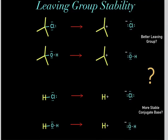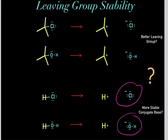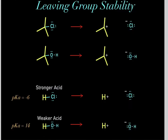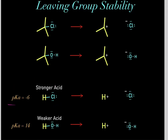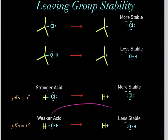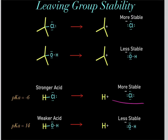Which is the better leaving group? It's the exact same question as asking which is the more stable conjugate base. You look at the pKa's of the acids — their acid forms. The lower the pKa, the stronger the acid. You would look in a chemistry textbook and see that HCl has a pKa of negative 6, while water has a pKa of 14. So HCl has a lower pKa, making it the stronger acid. Because it's a stronger acid, it forms a more stable conjugate base. So we know this conjugate base is more stable, and therefore this leaving group is more stable.